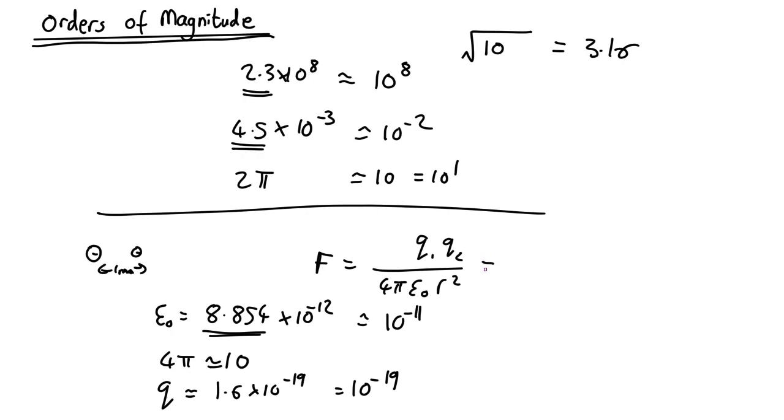So plugging that into here we get 10 to the minus 19 squared over 10 times 10 to the minus 11, which is equal to 10 to the minus 38 over 10 to the minus 10, which is 10 to the minus 28 newtons. Simple enough that you don't need a calculator, which means one less thing you can stuff up.